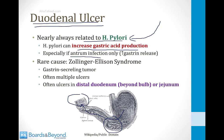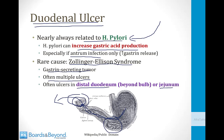A rare cause of duodenal ulcers is Zollinger-Ellison syndrome, which occurs when there is a gastrin-secreting tumor. These tumors create significant acid production and often lead to multiple ulcers in the duodenum. Because of the massive acid production, the acid can extend past the proximal duodenum into the distal duodenum or even the jejunum. A classic finding is multiple ulcers beyond the duodenal bulb or in the jejunum, which almost always occurs only in Zollinger-Ellison syndrome.